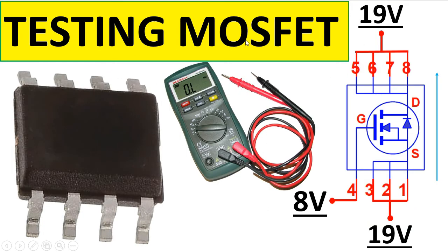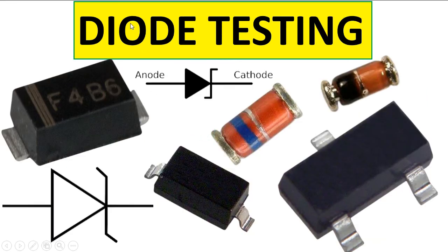To test a MOSFET, you can see here that it has four pins for drain, three pins for source, and one gate pin — the gate is the control signal. Use a multimeter set to continuity mode. Check between drain and source: if you find any continuity, the MOSFET is shorted. Also check between gate and drain, and between gate and source.